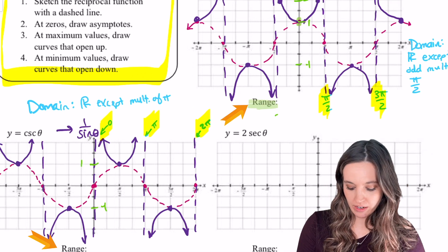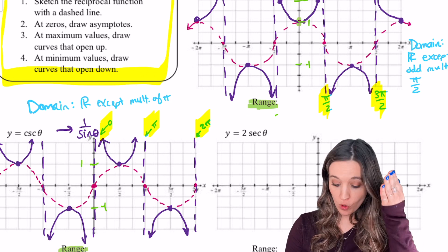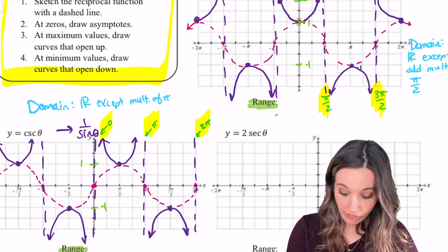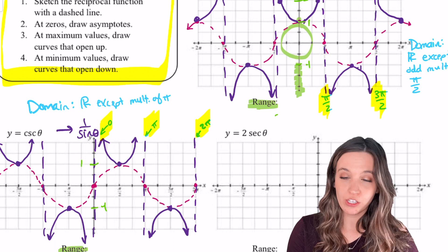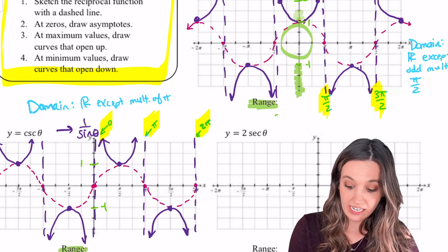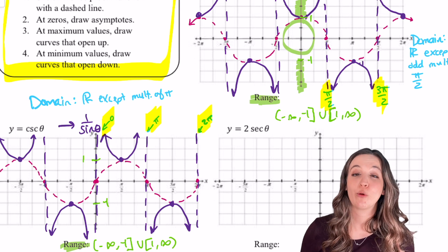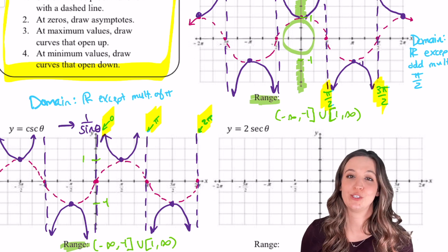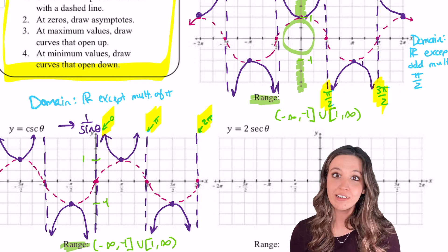So what about the range then? Well, if I walk up the y-axis, I can see the graph at negative infinity all the way up to negative 1. Then there's a gap where I don't see the graph until I hit 1 and then I see it going up to infinity. So in interval notation, the range for both secant and cosecant is negative infinity to negative 1 inclusive, 1 inclusive to infinity.